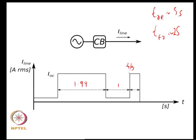Now if the overcurrent comes up again, it will not need another full 2 seconds to trip — only one-fifth of the distance remains, so it would need about 0.4 seconds to trip. Assuming constant trip and reset rates, you can therefore track what happens when currents go up and down in a switched manner.